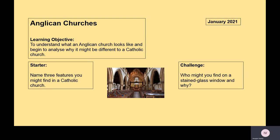The first thing I'd like you to do is have a go at the starter and challenge questions on the screen. Name three features you might find in a Catholic church — this is trying to cast your minds back to last week. Your challenge question is: who might you find on a stained glass window, and why? Those stained glass windows in Catholic churches have specific individuals on them — who might we see and why would that person be featured? Pause the video here to answer those questions.